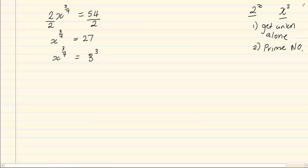Once you have the prime numbers and you are left with one term to one term - notice, I have one term on my left and I have one term on my right - now you multiply with the opposite power that is with the x or the unknown.